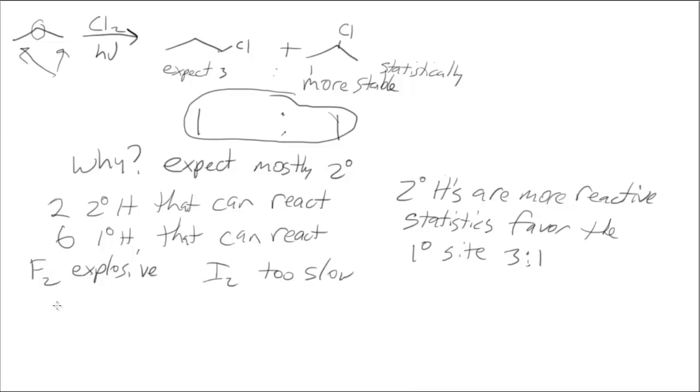Chlorine is going to be fast, while bromine is going to be slow. So they're in between. The fluorine is too fast, the chlorine is fast, the bromine is slow, and the iodine is too slow.